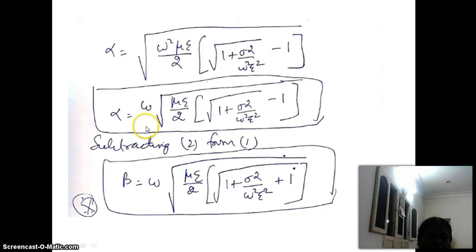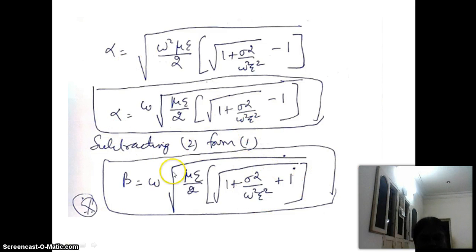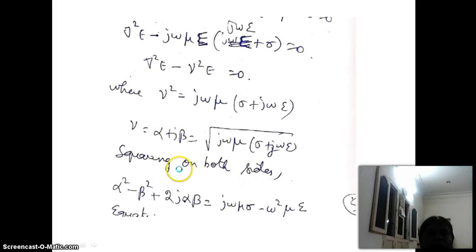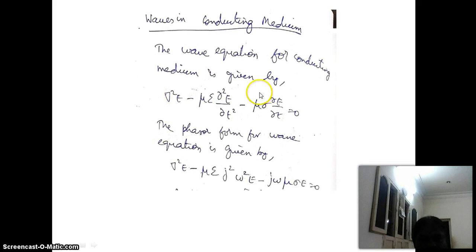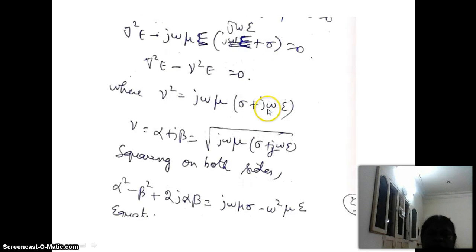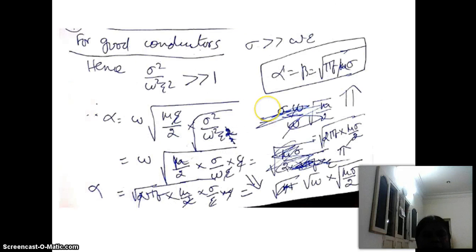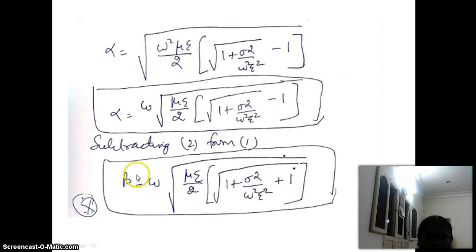These are the wave parameters: attenuation constant alpha, phase constant beta, intrinsic impedance, and propagation constant gamma. We have derived these wave parameters for plane waves in a conducting medium. For conducting medium, an additional term mu sigma times the partial of E with respect to t is included compared to the dielectric wave equation. For dielectrics, conductivity is zero so that term is neglected; for conducting medium it must be included from Maxwell's equations.